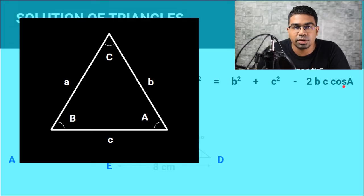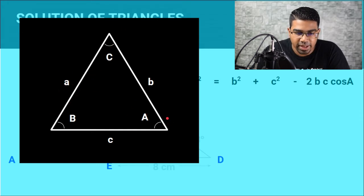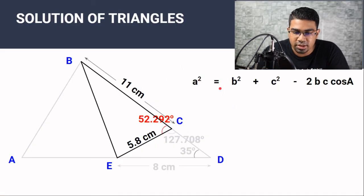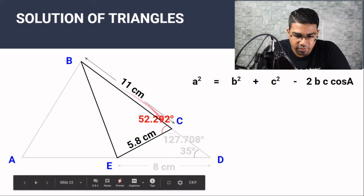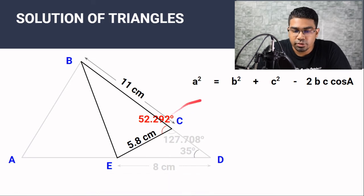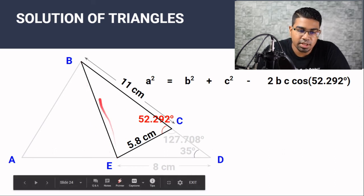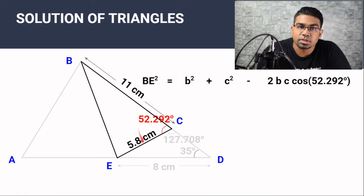When using the cosine rule, it is important to understand the variables. Side a is opposite angle A, side b is opposite angle B, and side c is opposite angle C. The cosine formula is: a² = b² + c² − 2bc cos A. In this situation we have two sides and one angle. The trick is that the known angle will be A — in this case cos of 52.292 degrees. Since this angle is A, the opposite side is a, so BE is side a and we substitute BE².